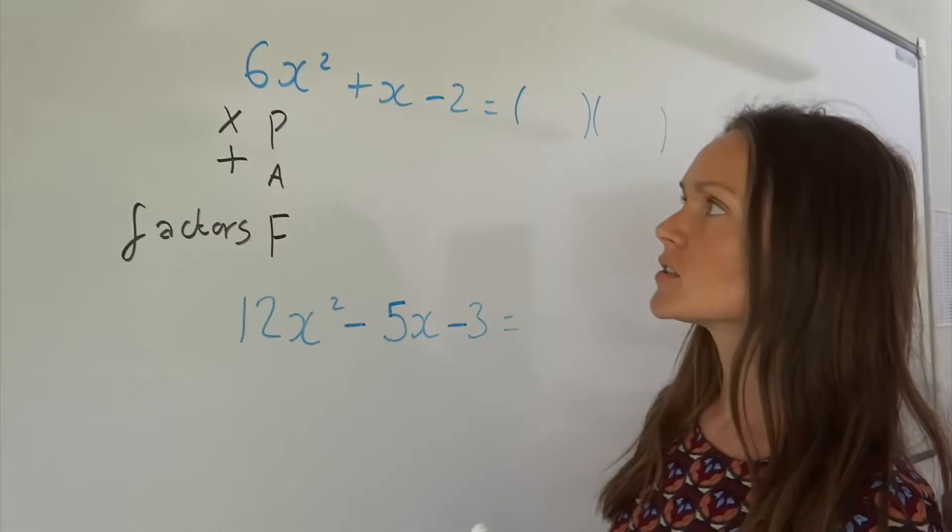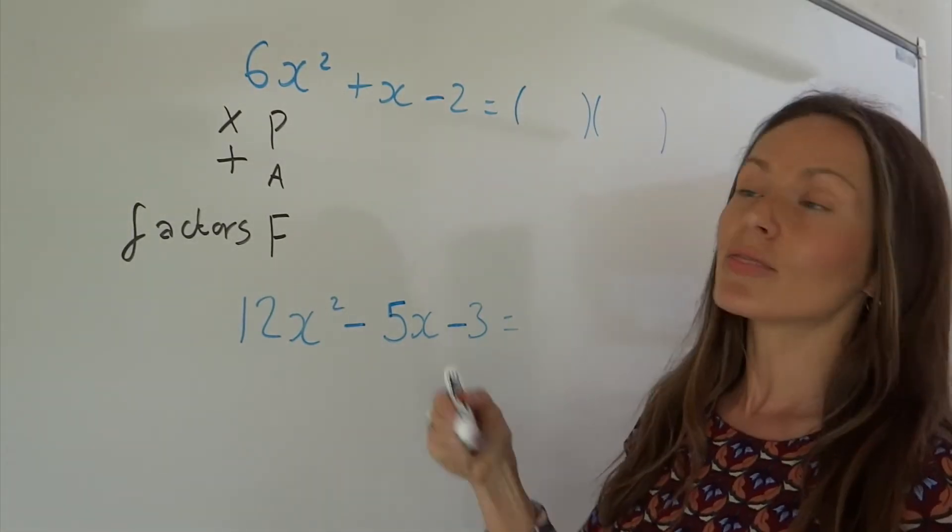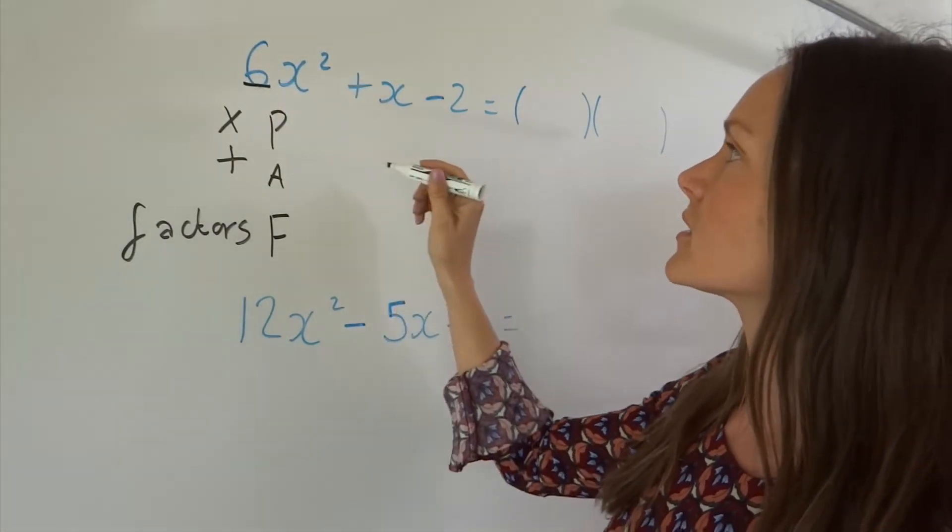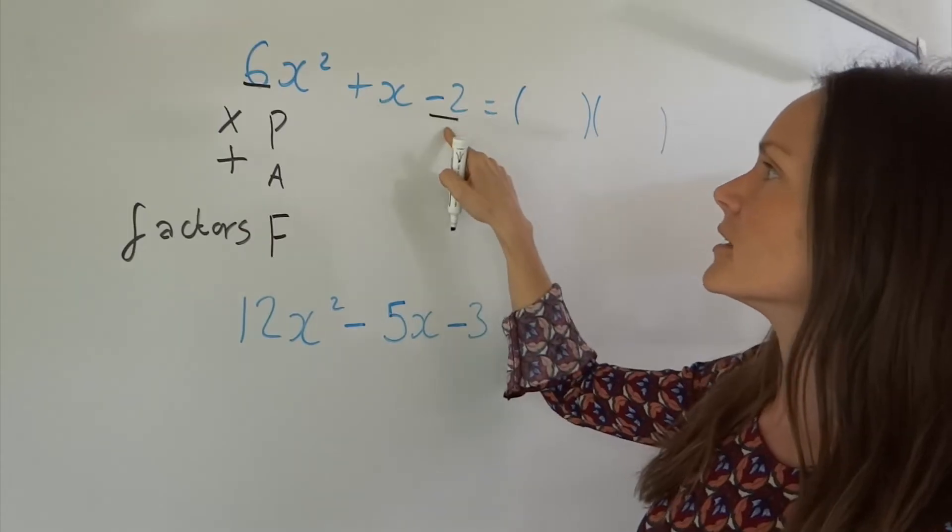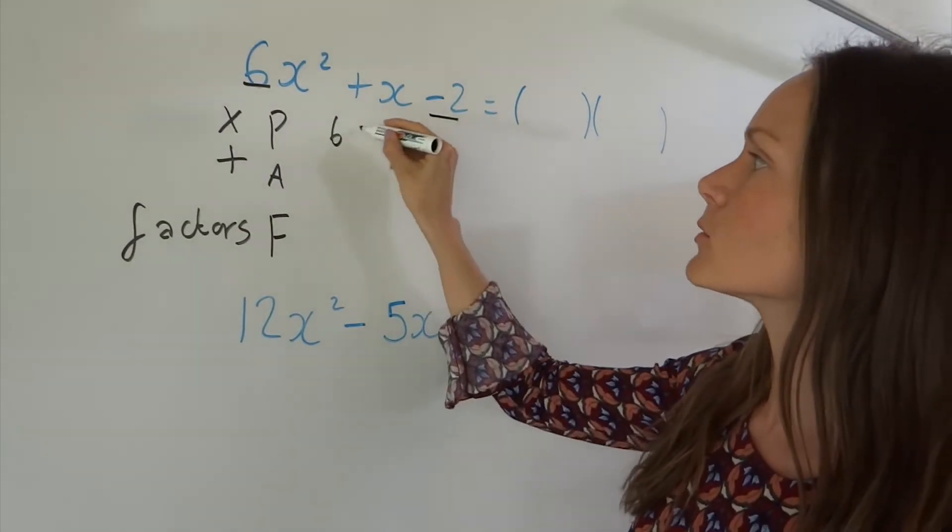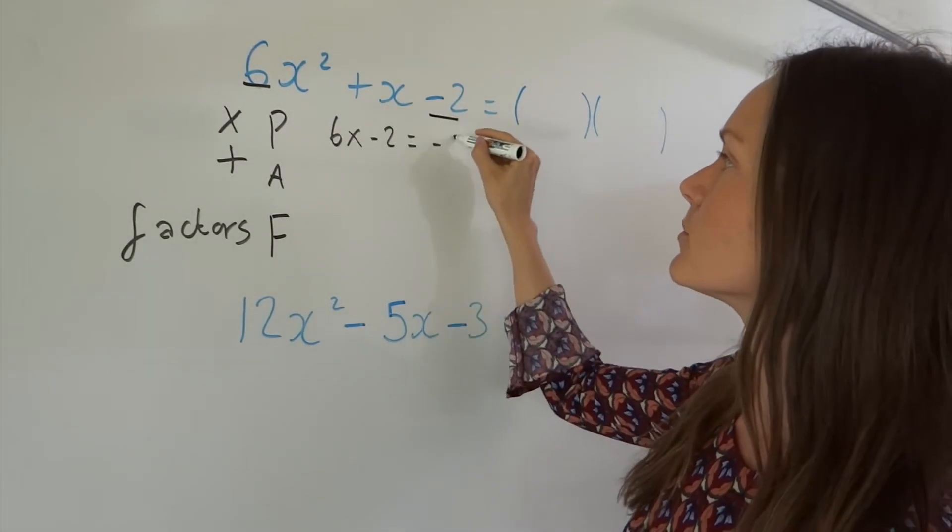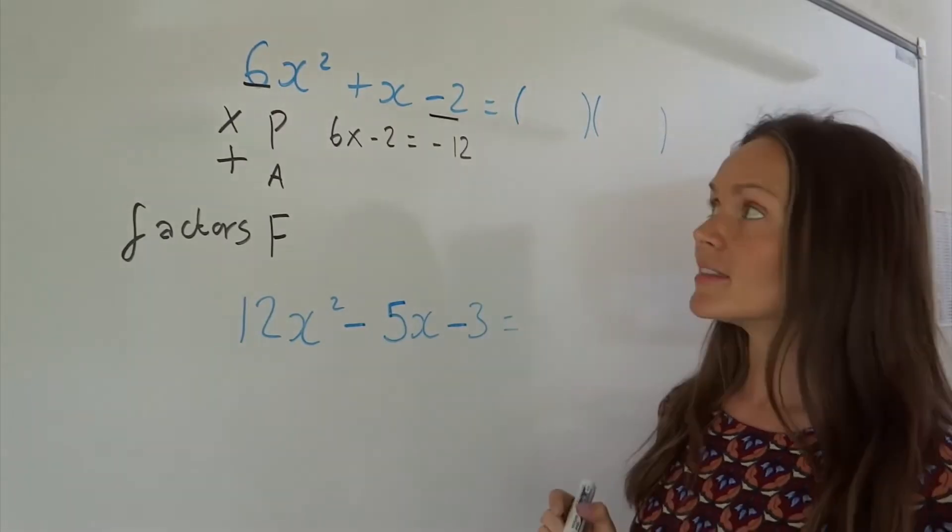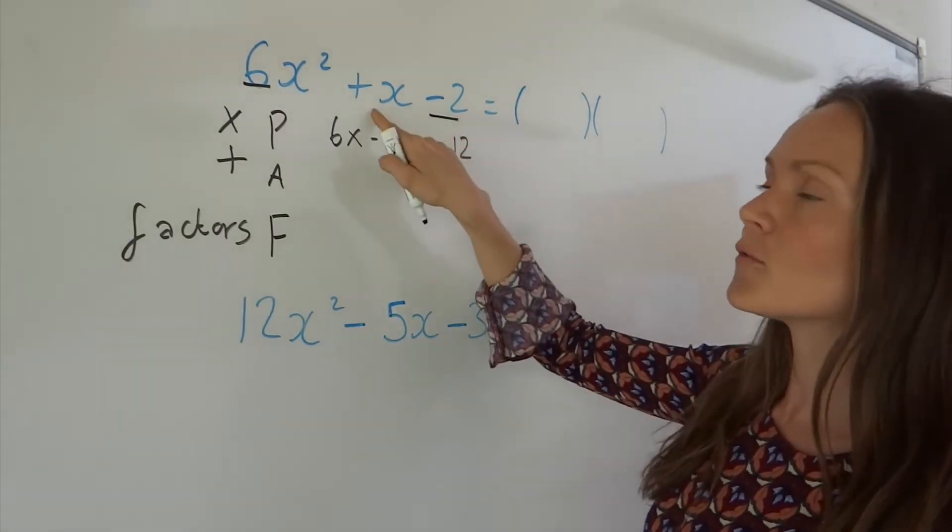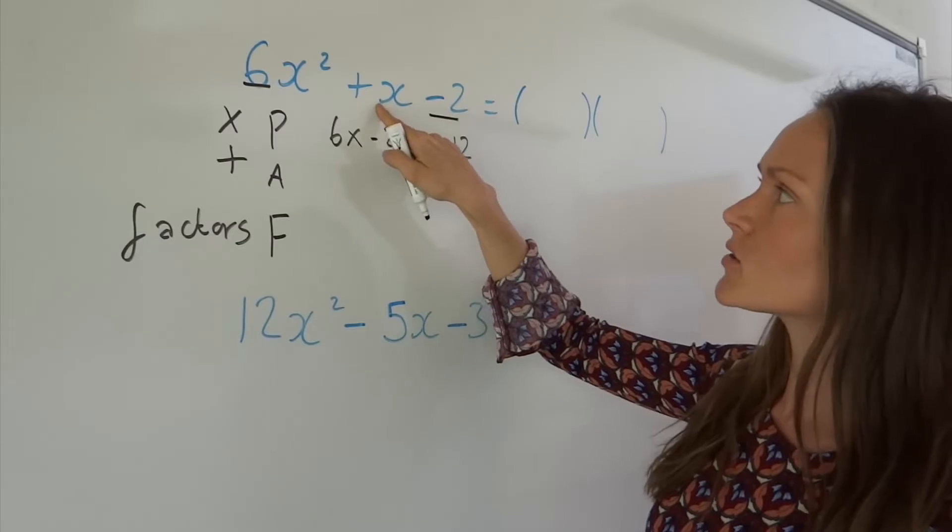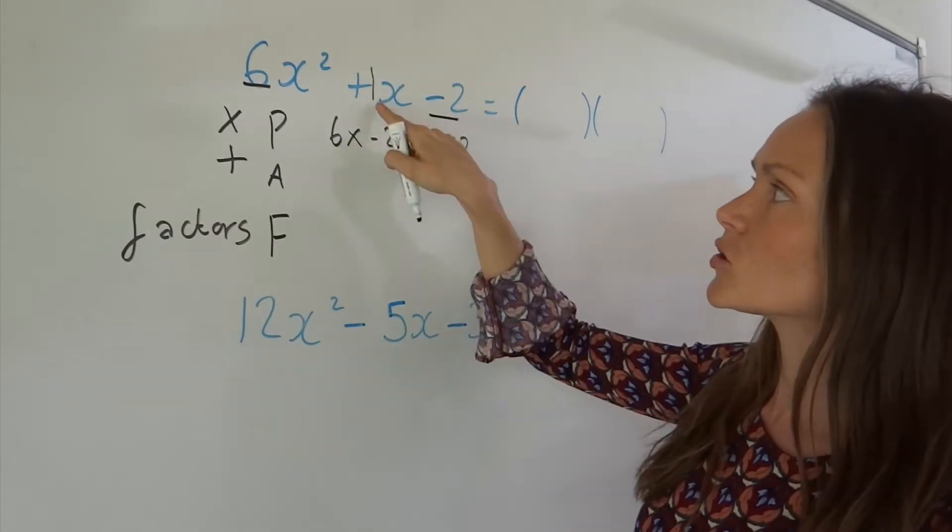We find the product by multiplying this number here in front of the x squared with the number at the end. So 6 multiplied by negative 2 gives me negative 12. The addition is the coefficient of just the single x term. So in this case, it's just positive 1.